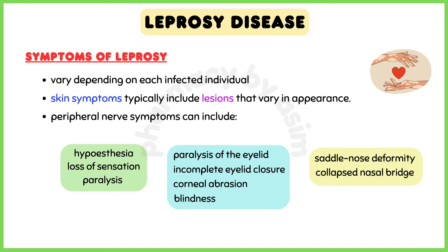Symptoms of leprosy vary depending on each infected individual. Skin symptoms typically include lesions that can vary in appearance. Peripheral nerve symptoms can include hypoesthesia, or loss of sensation, and paralysis, typically of the hands and feet. If the nerves of the eyelid muscles or cornea are affected, paralysis of the eyelid may occur and lead to incomplete eyelid closure, or corneal abrasion, ulceration, and even blindness. If the nasal mucosa is affected, a saddle-nose deformity, or a collapsed nasal bridge, may occur.